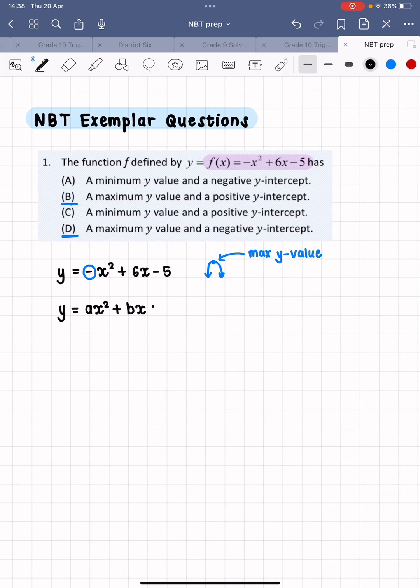looks like this, y equals ax squared plus bx plus c, the c value is your y intercept.